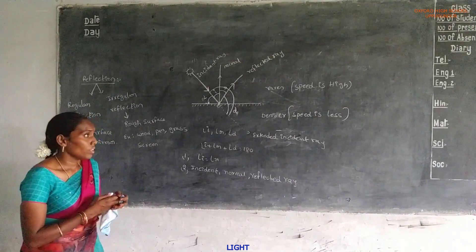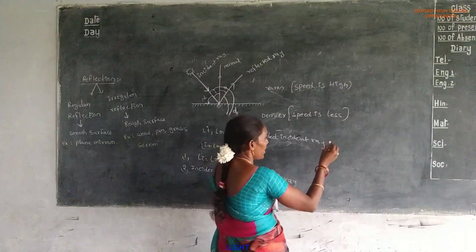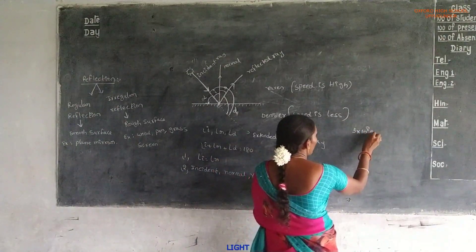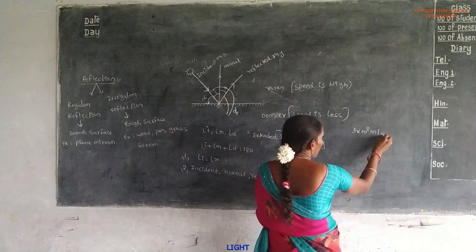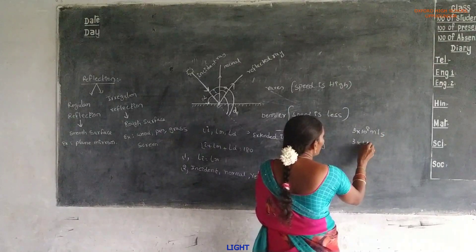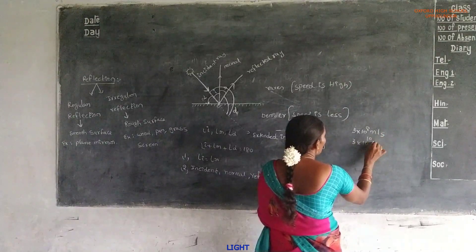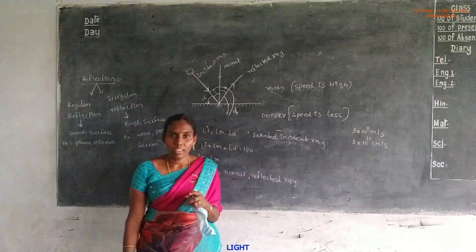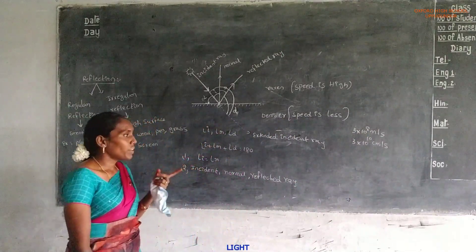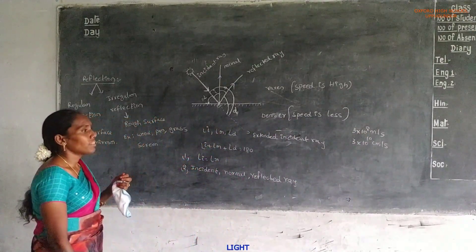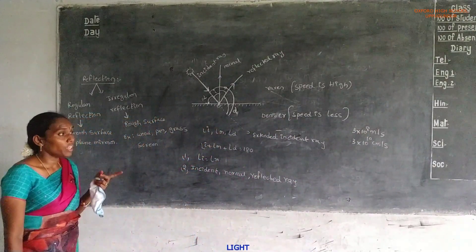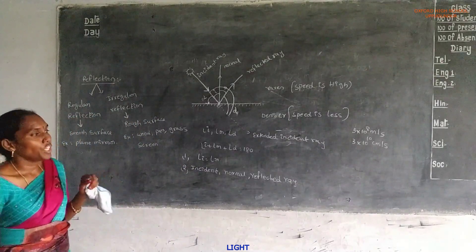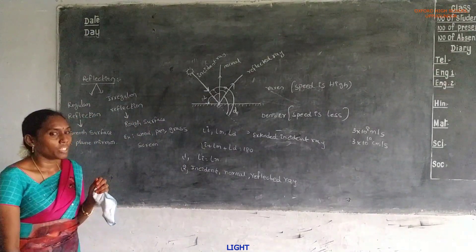The speed of light in air is 3 × 10⁸ meters per second, or 3 × 10¹⁰ centimeters per second. The speed of light in vacuum is 3 × 10¹⁰ centimeters per second.